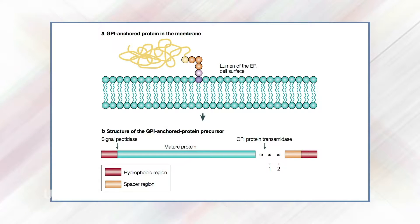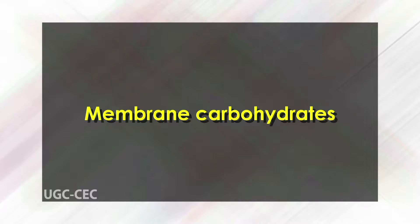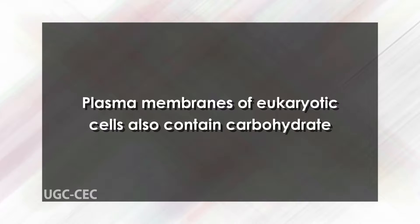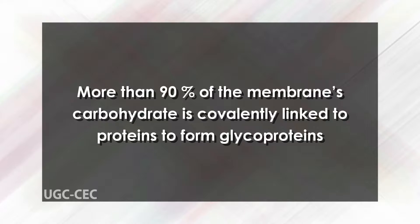The plasma membranes of eukaryotic cells also contain carbohydrate. Depending on the species and cell type, carbohydrate content of the plasma membrane ranges between 2 and 10 percent by weight. More than 90 percent of membrane carbohydrate is covalently linked to proteins to form glycoproteins; the remaining carbohydrate is covalently linked to lipids to form glycolipids.